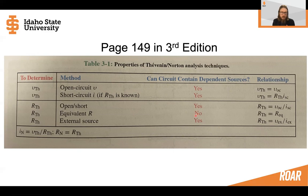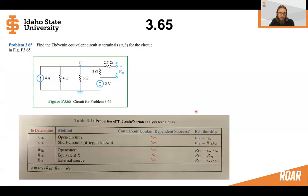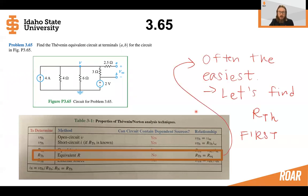In particular, note that the equivalent resistance method cannot contain dependent sources — it can only contain independent sources. Looking at our circuit, we do not have any dependent sources, only independent sources. So let's find the Thevenin resistance first using the equivalent resistance method, since this is typically the easiest method.